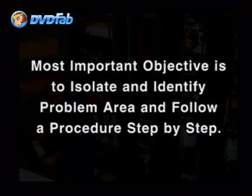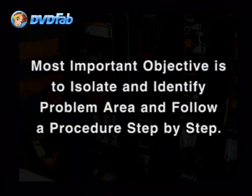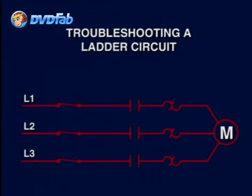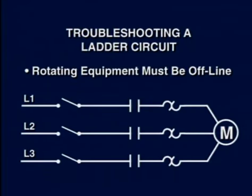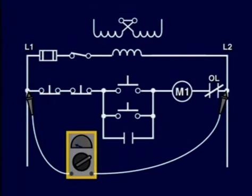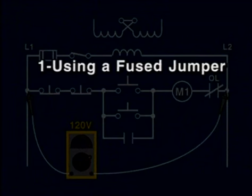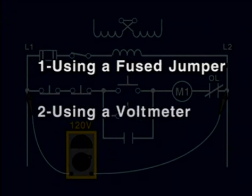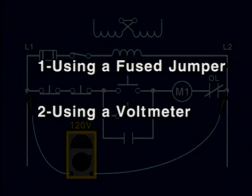The most important objective in troubleshooting for an operational fault is to isolate and identify the problem area. To accomplish this, we also follow a set of procedures step by step. The first thing to do is to make sure that all rotating equipment cannot be brought in line during the testing of ladder rung circuits. We could use two methods: one is by using a fused jumper, and the other is by using a voltmeter and measuring for voltage presence or for an open circuit. We could of course use a combination of both, but we just need to perform the tests in a predetermined manner.